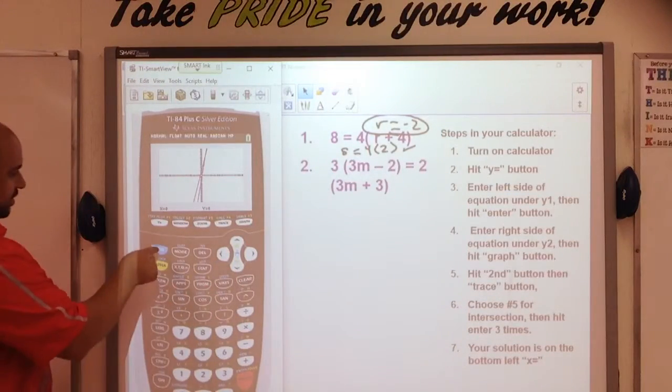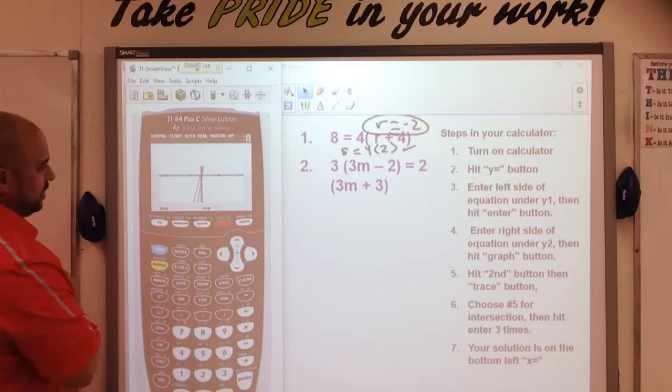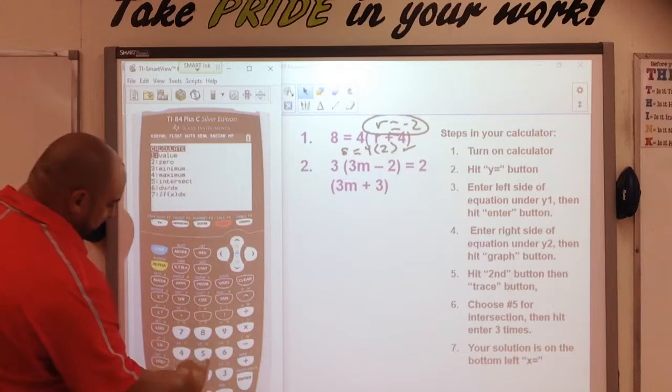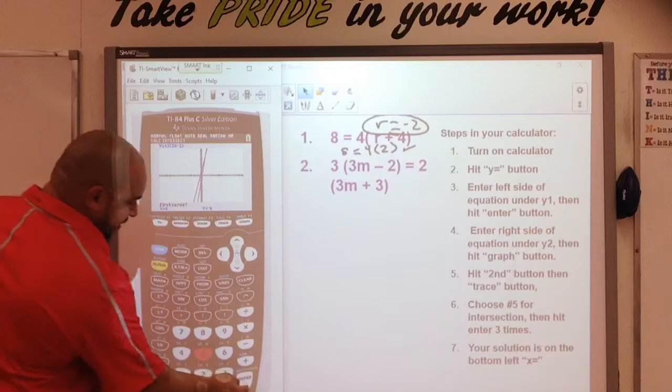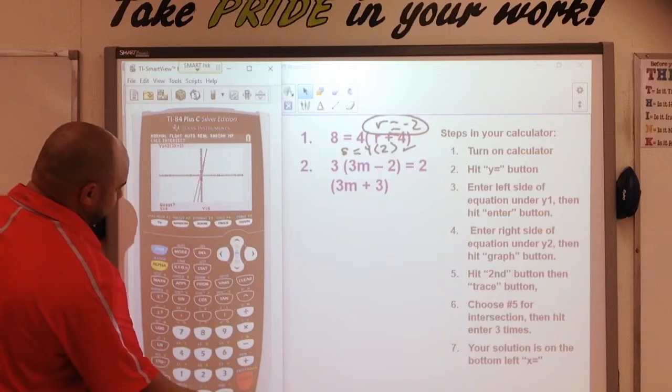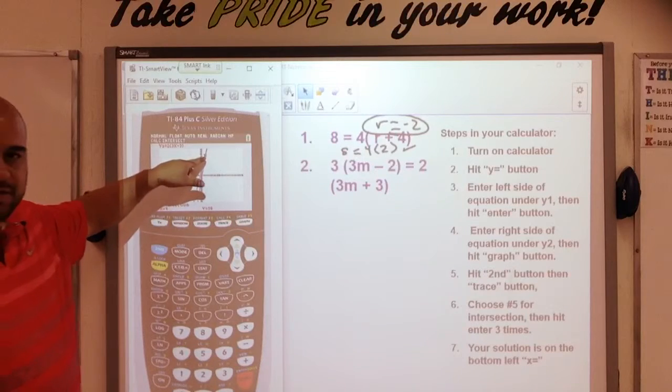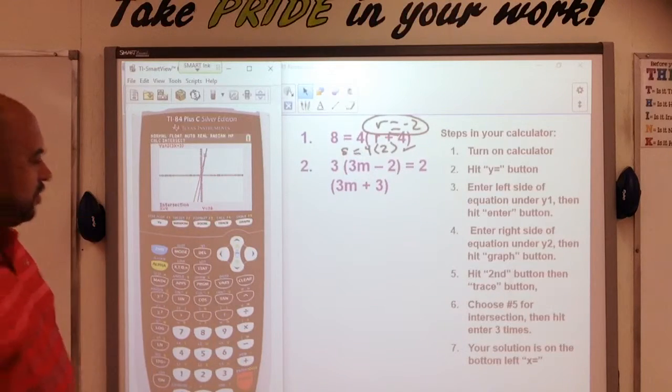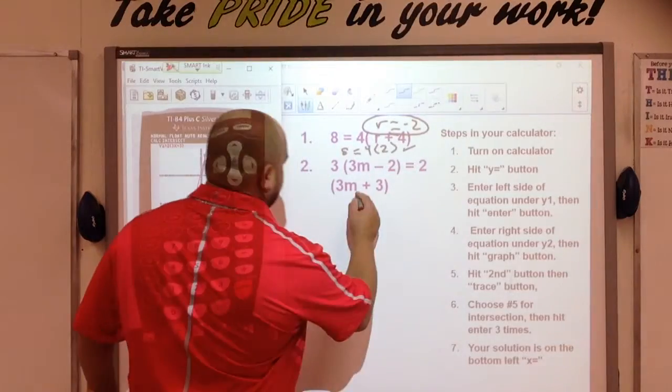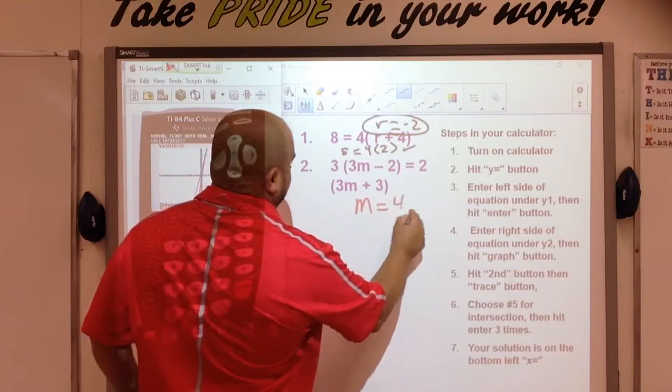Now, I'm going to hit second and trace. Second, trace. I'm going to choose number 5. And then hit enter once, twice, three times. Notice it jumped to the point of intersection, which is at x equals 4. So, in this case, m is equal to 4.